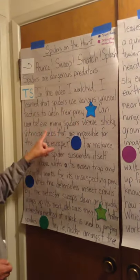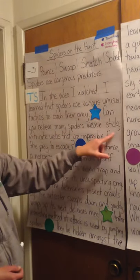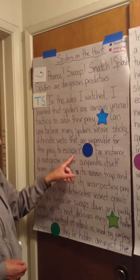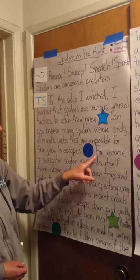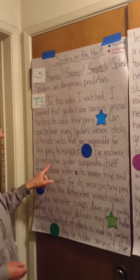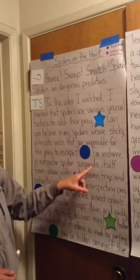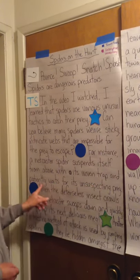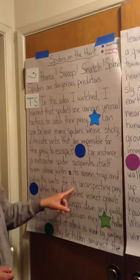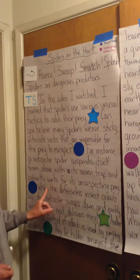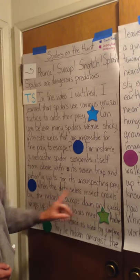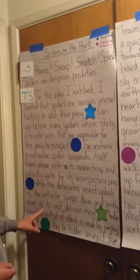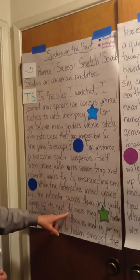Can you believe that many spiders weave sticky, intricate webs that are impossible for the prey to escape? For instance, a netcaster spider suspends itself from above with its woven trap and patiently waits for its unsuspecting prey. When the defenseless insect crawls by, the netcaster swoops down and quickly wraps up its next delicious meal.